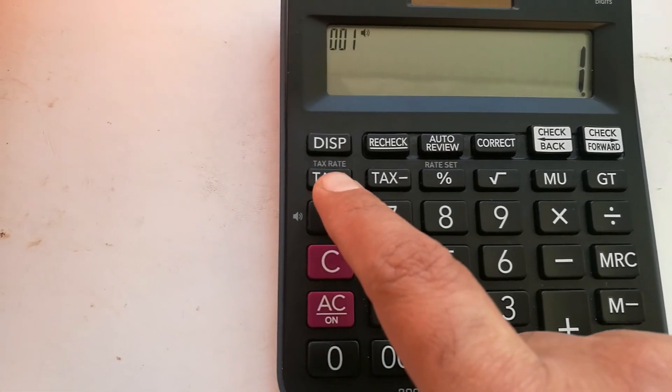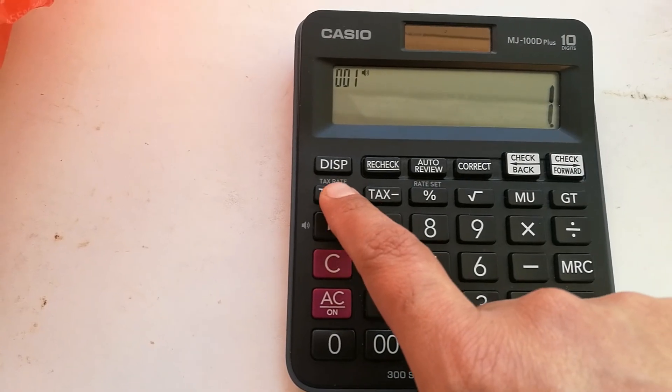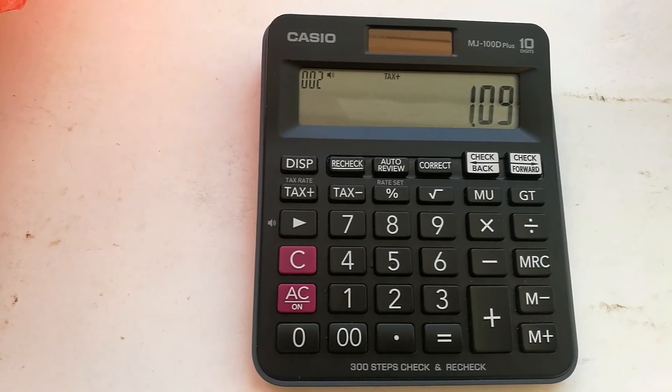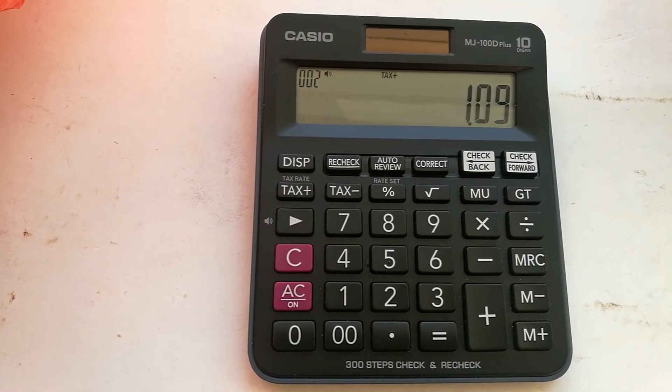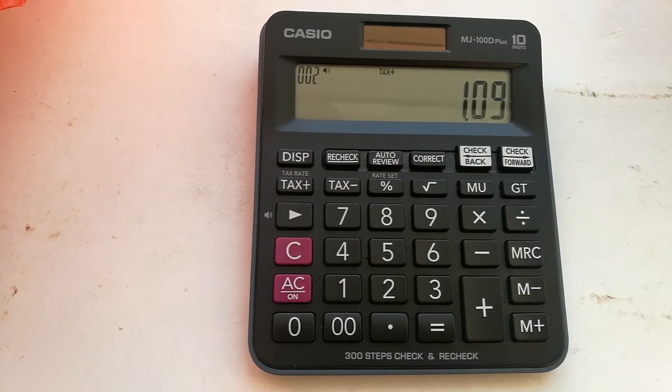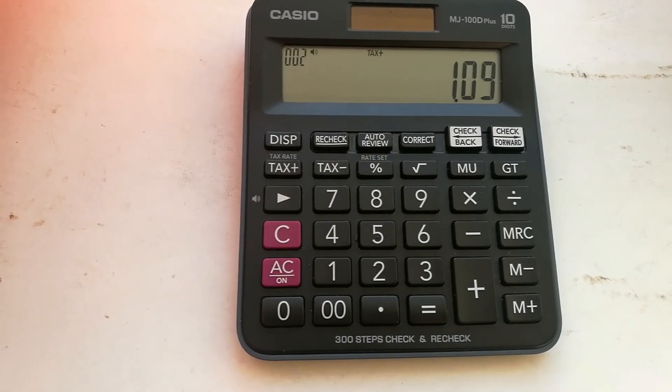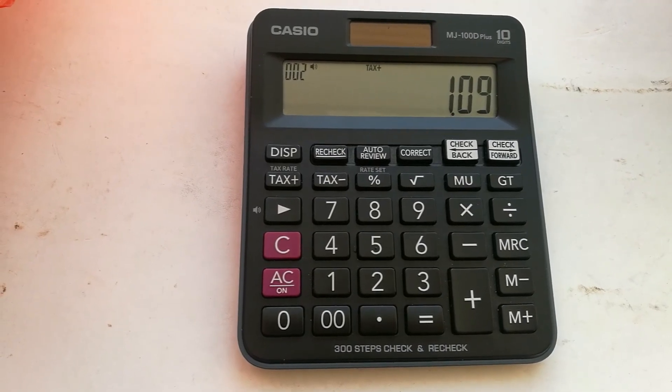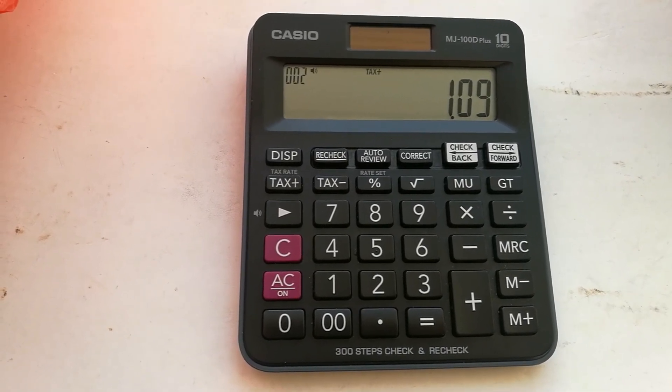And then I just have to press tax plus button. It will show me the tax rate which I already set. So tax plus button I press. So here you go, you can see here the answer is in front of you, the tax rate is showing you now. So please like my video, please do subscribe to my channel. Thank you very much.